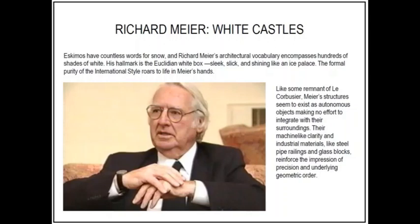One of the pioneering architects of Neo-Modernism is Richard Meier. He graduated from Cornell University and opened his own office in 1963. Of the architects known as the 'Whites' or the 'New York Five,' Richard Meier probably stayed closest to his Modernistic roots even as his buildings became more lavish. His architectural vocabulary encompasses hundreds of shades of white. His hallmark is the Euclidean white box — sleek and shining like an ice palace. The formal purity of the International Style became his trademark.